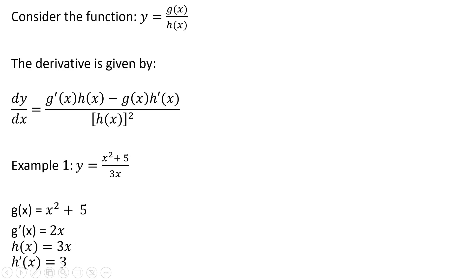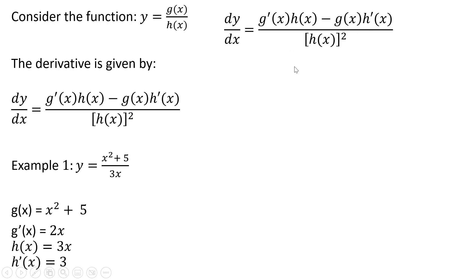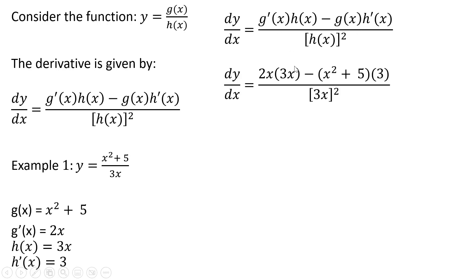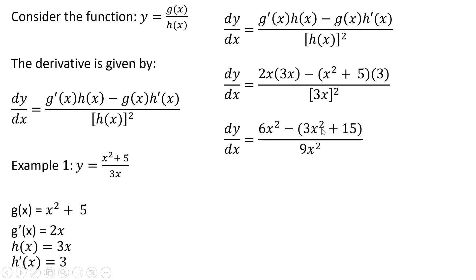Now we're going to plug everything into the appropriate spots in this formula. Rewriting the formula and making our substitutions: the derivative of what's in the numerator is 2x, and that's multiplied by the denominator, 3x. Then we subtract what we have in the numerator, all multiplied by the derivative of the denominator. What we have in the denominator, that entire thing, is squared. We can simplify this a little bit, and simplifying some more, we get the following result.